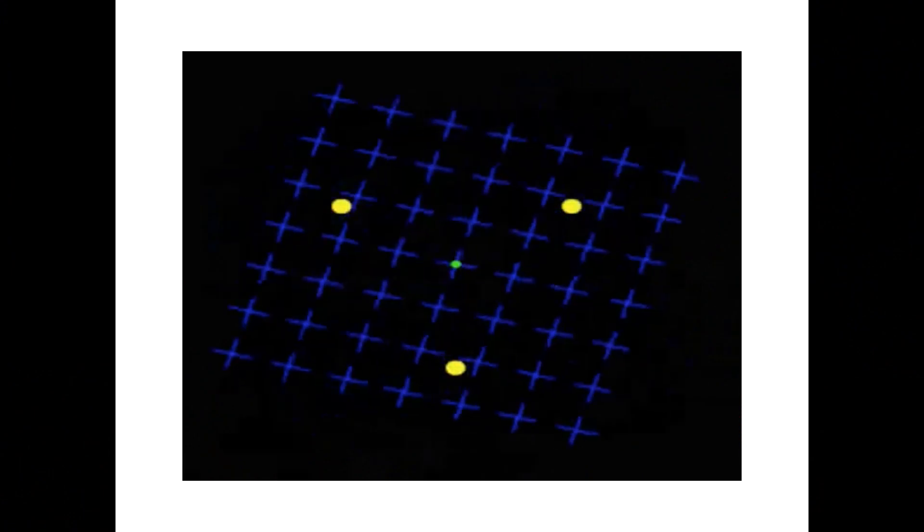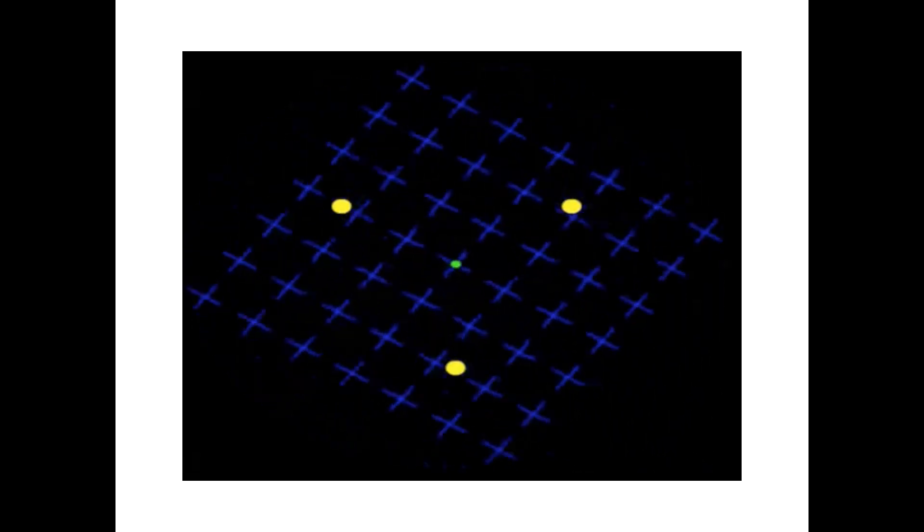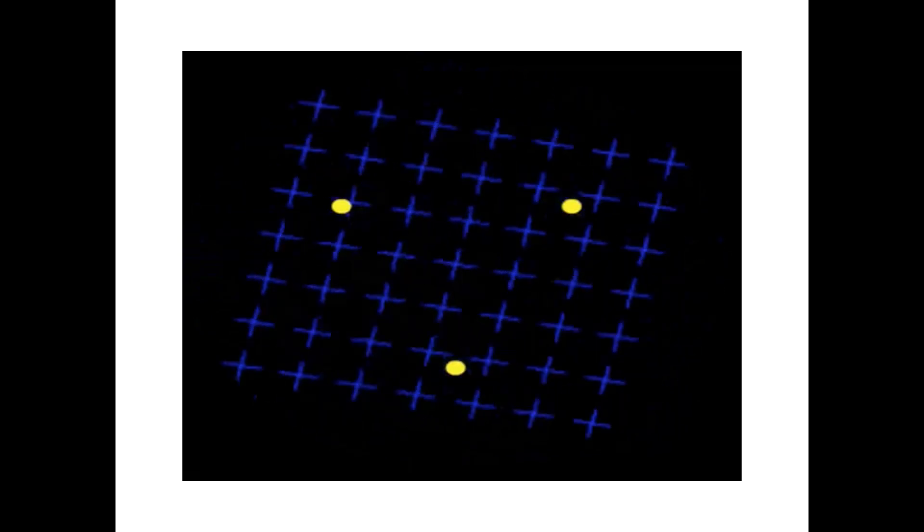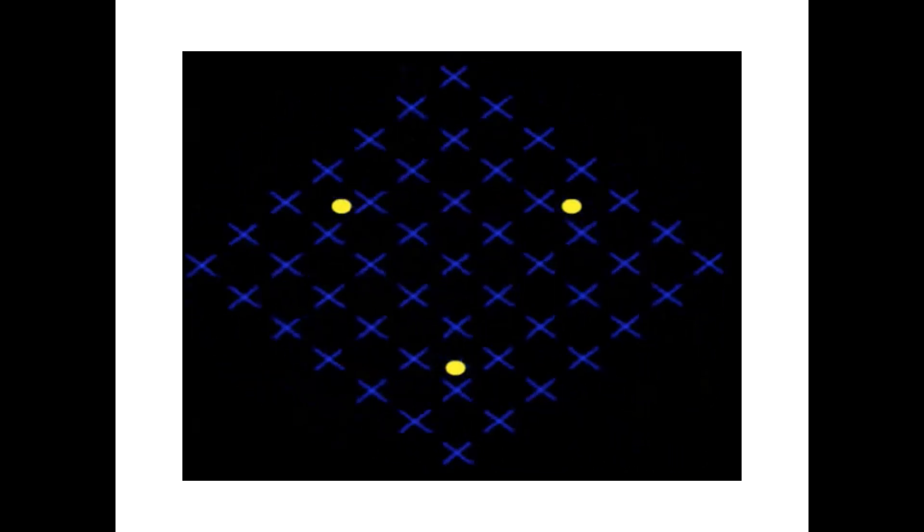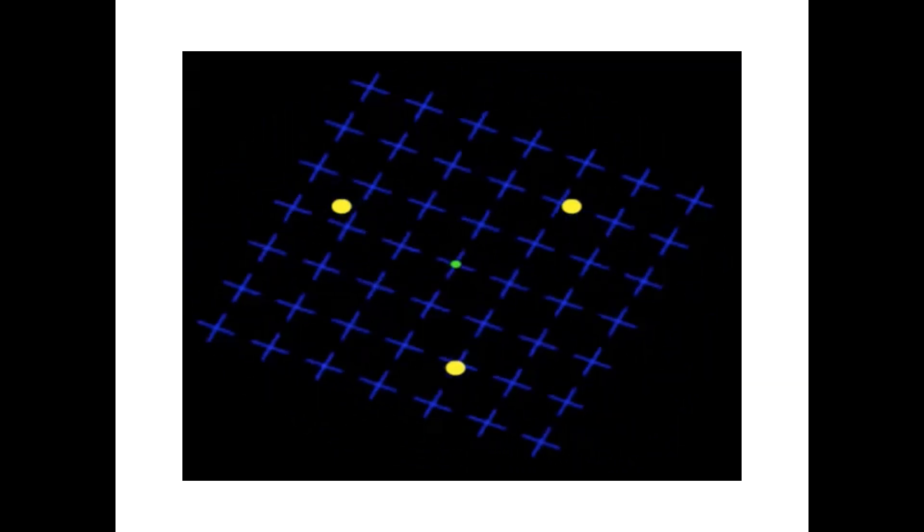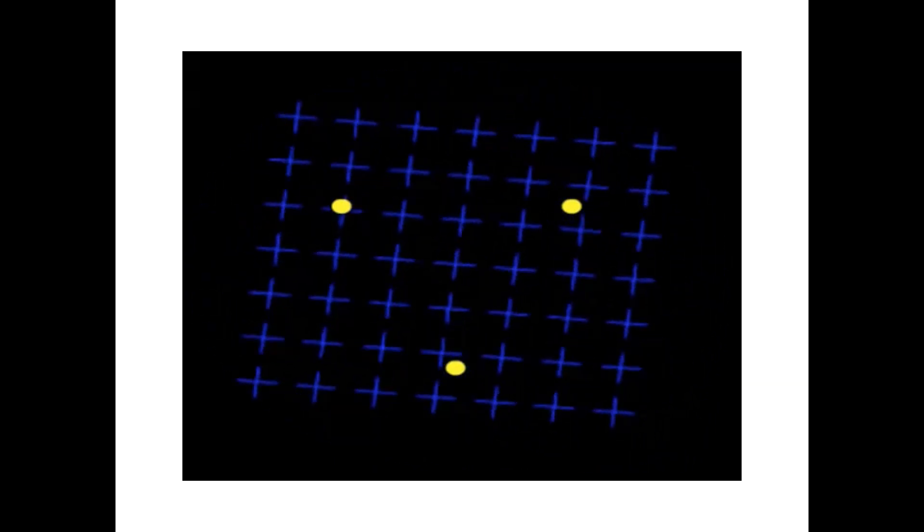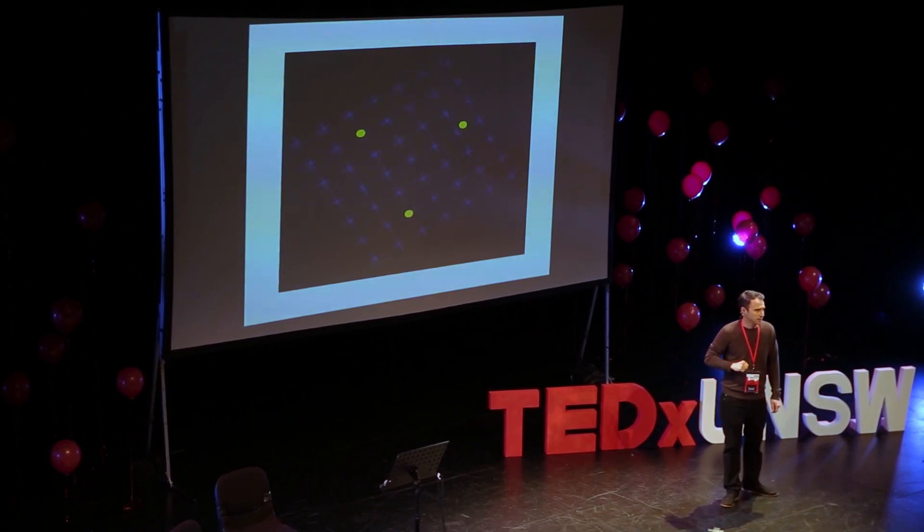So, this should work. If I get you guys just to look at that blinking green dot there in the center. Just keep your eyes focused on that. Look at that. And just without moving your eyes, pay attention to those three yellow dots. Just see if anything unusual is happening. Anyone see anything happen?